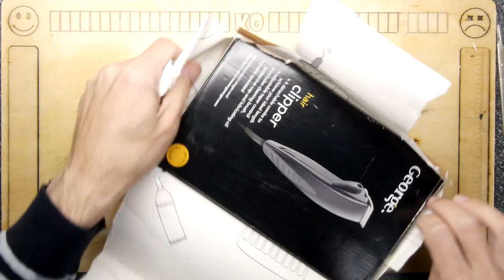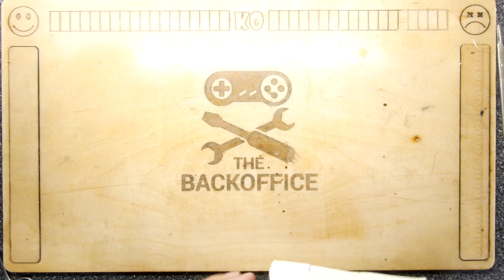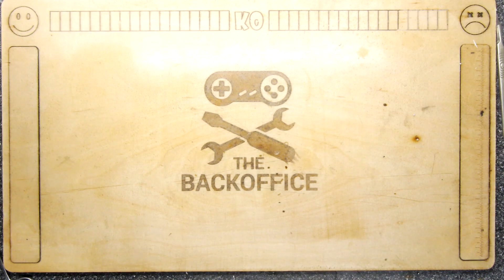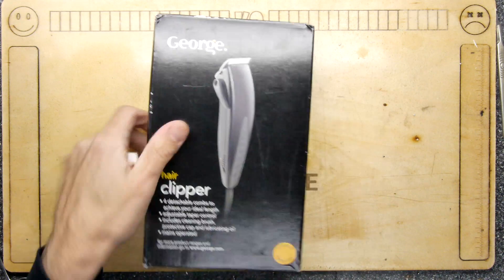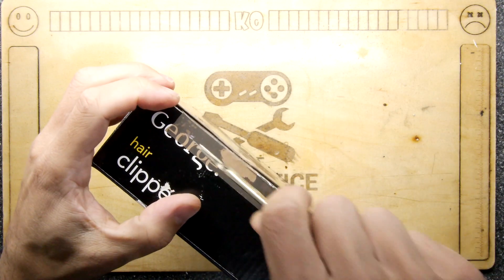I'm going to start using wallpaper to pack stuff because think about it, it's tough. You've got loads of it or you can just go to a shop and grab a load of it as a sample and say I need a meter of it. And it's all in a George Hare Clippers box.